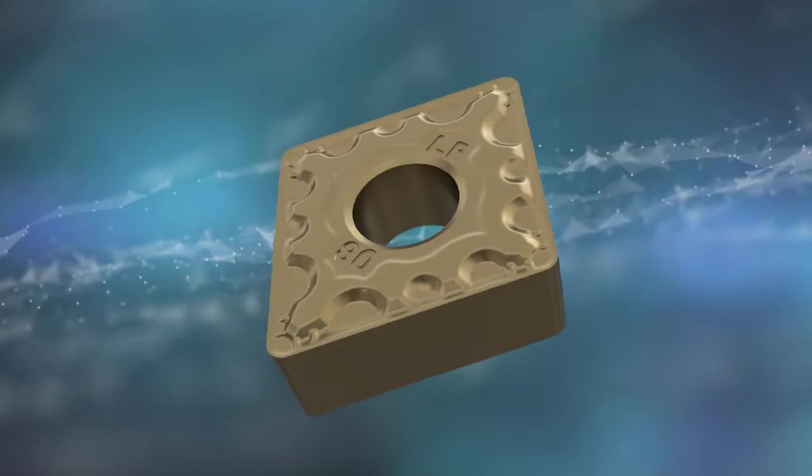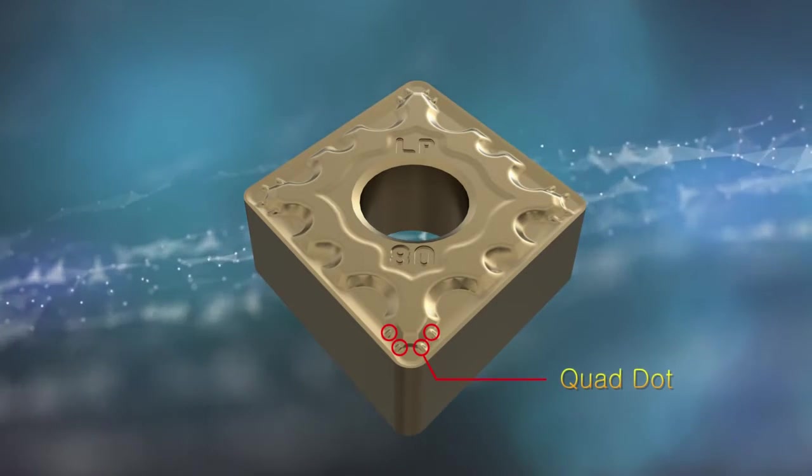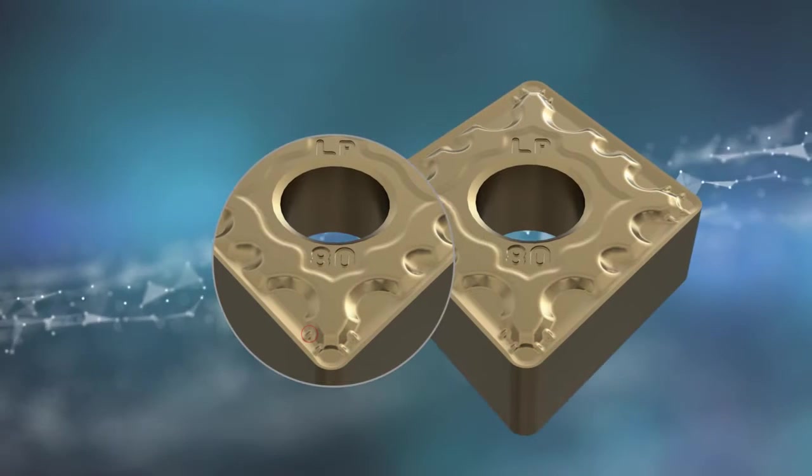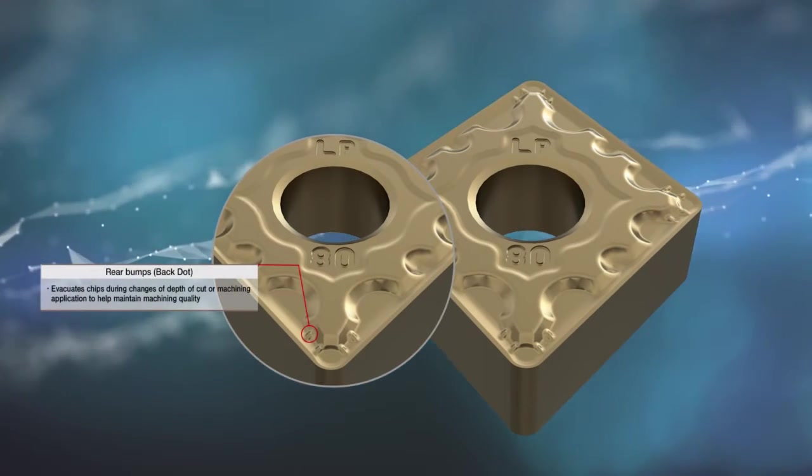Still guaranteeing the continual breaking of chips and continuous improvements, the aft bumps on the chip breaker help evacuate chips while sustaining the quality of machining, even during changes in slotting or milling conditions.